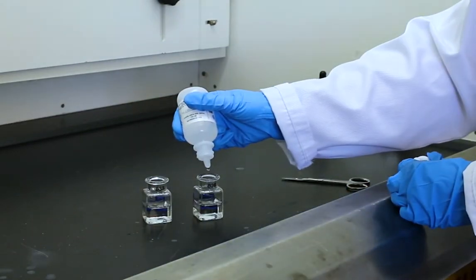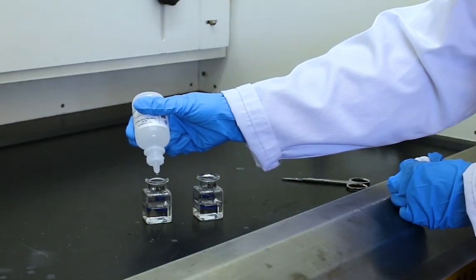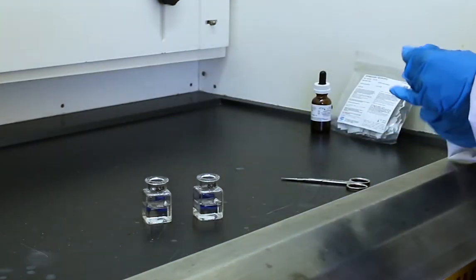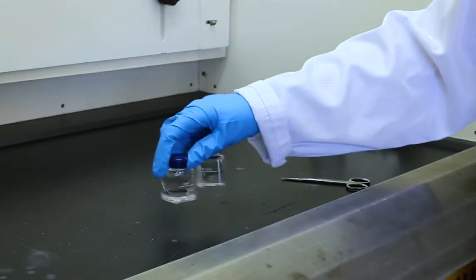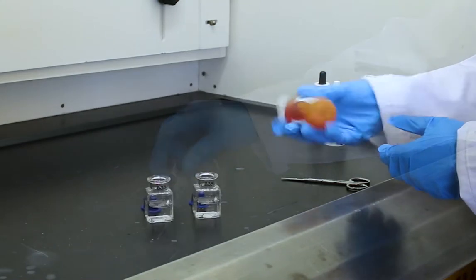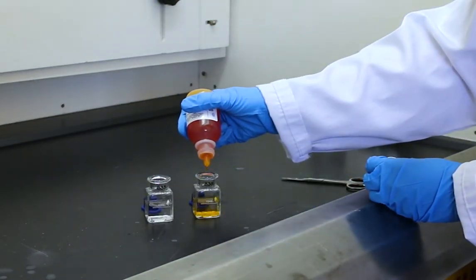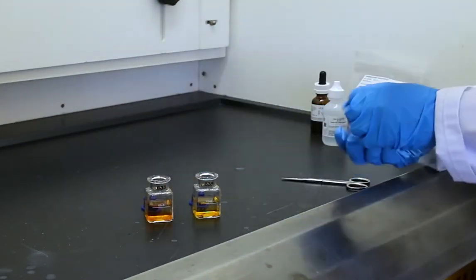Add 12 drops of the alkaline cyanide reagent solution into each cell and swirl them both to mix. Then add 12 drops of PAN indicator solution into each cell and swirl them to mix.